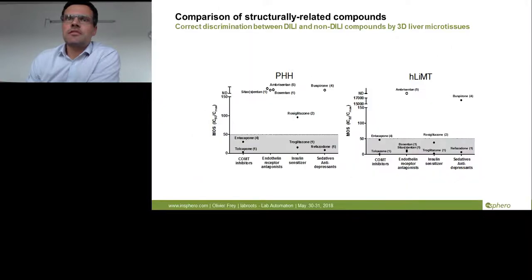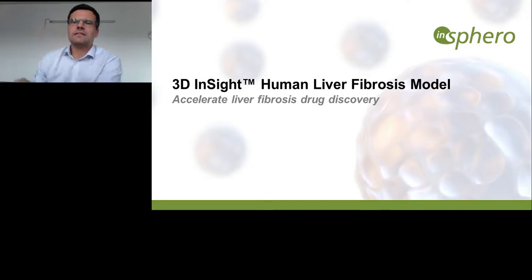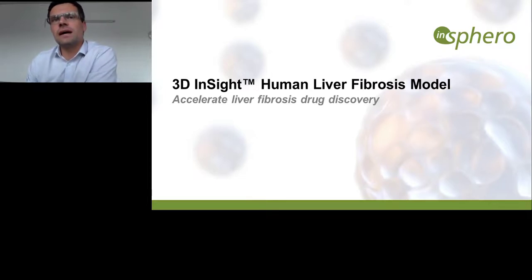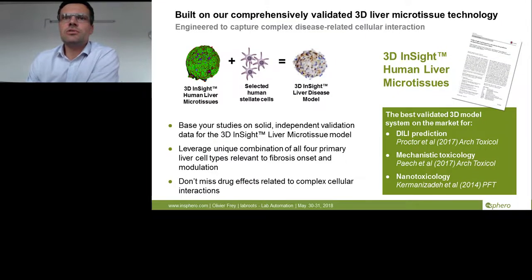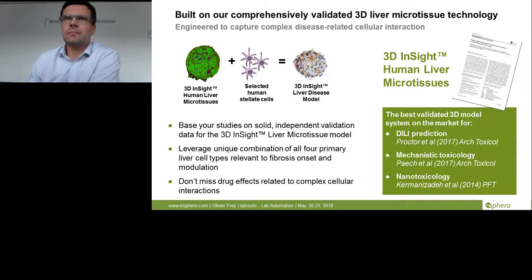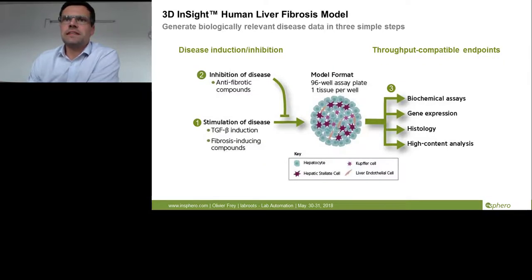An important additional aspect is that we can push these 3D microtissues into disease models, for example a liver fibrosis model. We take the validated 3D microtissue and add selected human stellate cells, creating a more complex triple or even quadruple culture that reflects some of the fibrotic mechanisms occurring in fibrosis. Using this quadruple culture we can stimulate the disease with specific stimuli such as fibrosis-inducing compounds or TGF-beta, and also inhibit disease progression using anti-fibrotic markers.